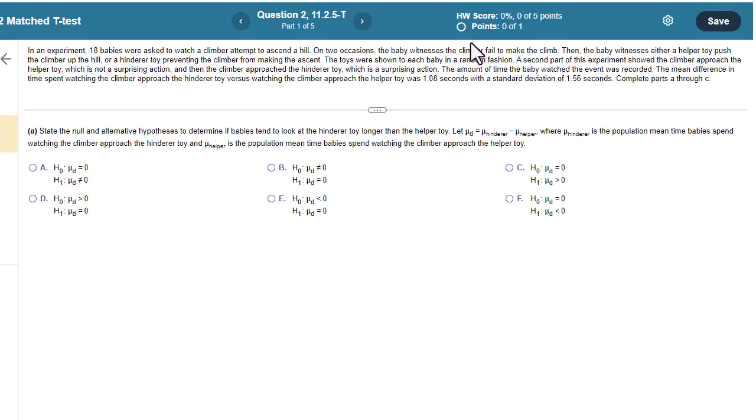In an experiment, 18 babies were asked to watch a climber attempt to ascend a hill. On two occasions, the baby witnesses the climber fail to make the climb. Then, the baby witnesses that either the helper toy pushed the climber up the hill, or a hinderer toy, preventing the climber from making the ascent.